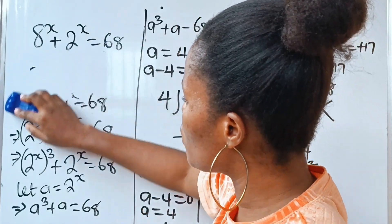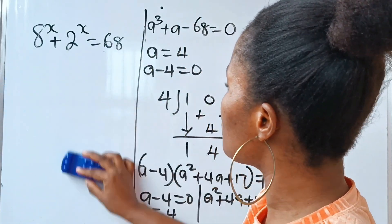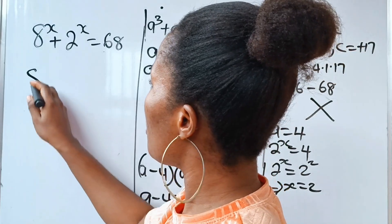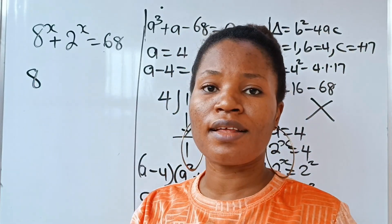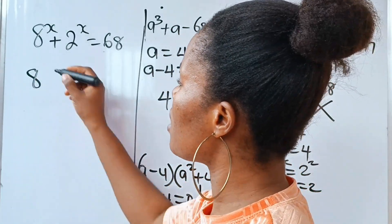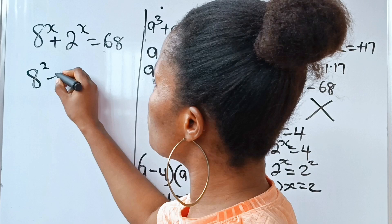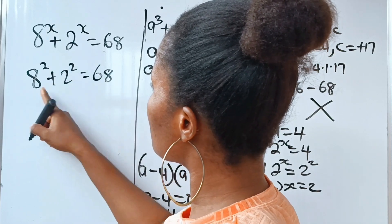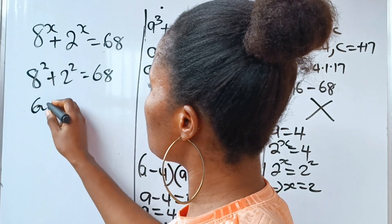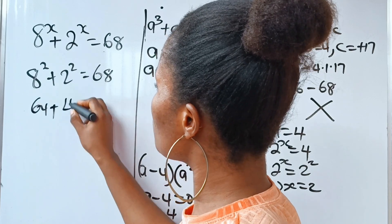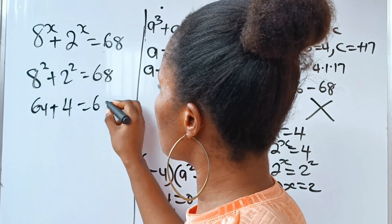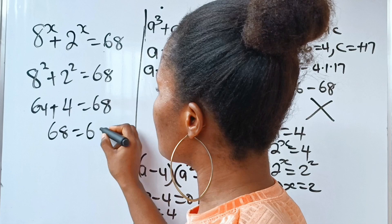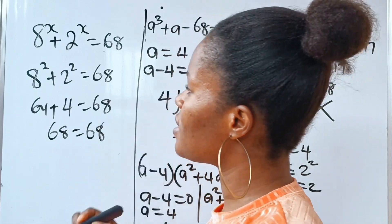Let's verify by substituting x equals 2 into the original equation. We get 8 to the power of 2 plus 2 to the power of 2 equals 68. That gives 64 plus 4 equals 68, which confirms the answer. So x equals 2.